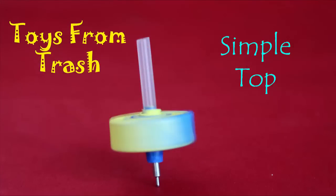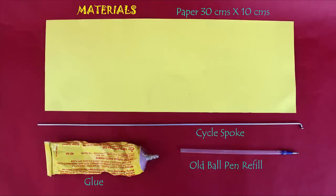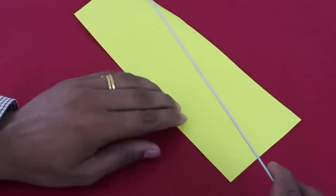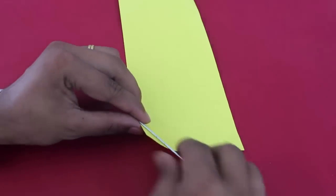To make this very simple top you need a rectangular piece of paper 30 cm long and 10 cm wide. You also need a cycle spoke, an old ball pen, and glue.